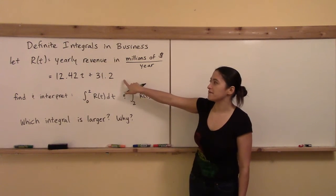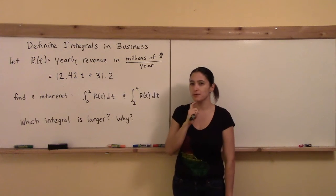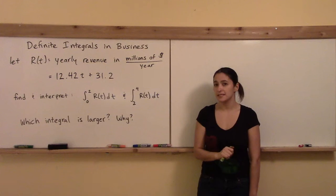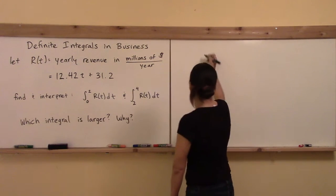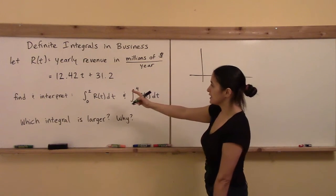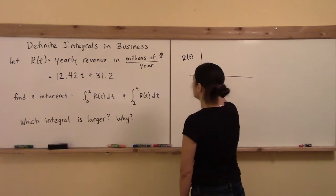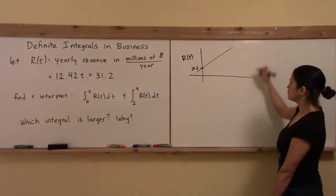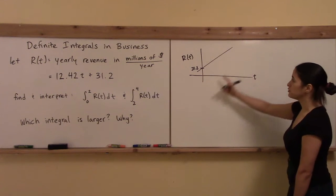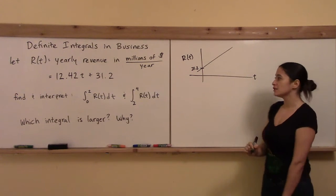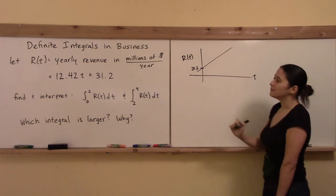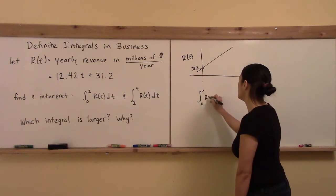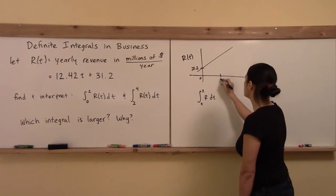Here's a hint: graph the yearly revenue and remember the relationship between definite integrals and the area under the curve. Since R(t) = 12.42t + 31.2 is linear, it has a y-intercept of 31.2 and slopes upward — the continuous revenue stream keeps increasing at a linear rate. The first integral is the area under the curve from 0 to 2, forming a trapezoid.